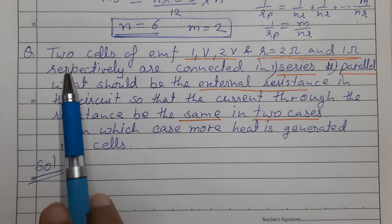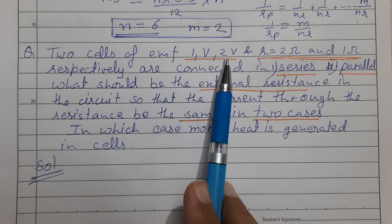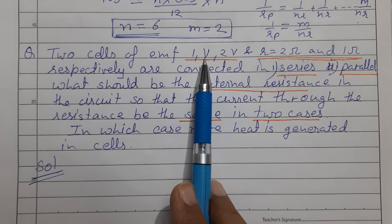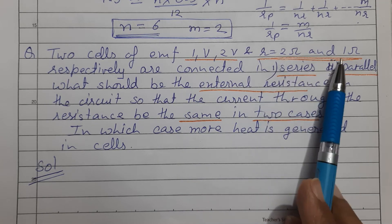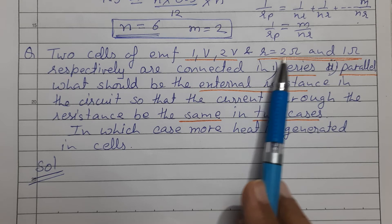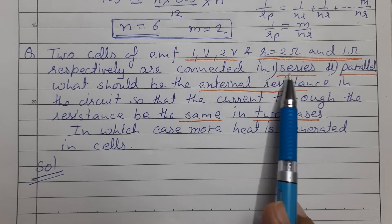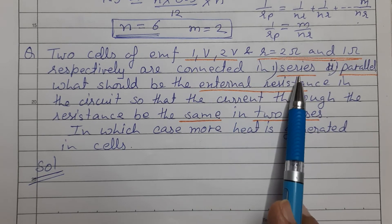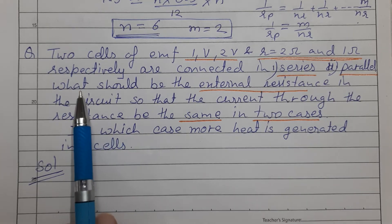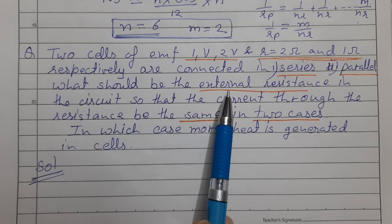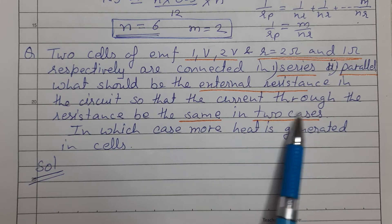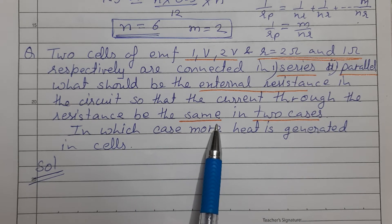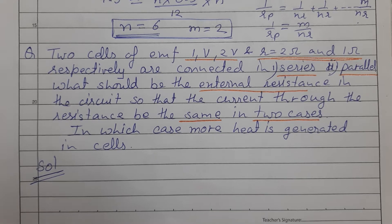Next question: two cells of EMF E1 and E2 — meaning the EMFs are not equal — with different respective internal resistances. The two cells are connected first in series and then in parallel. We need to find the external resistance R such that the current through R is the same in both cases.